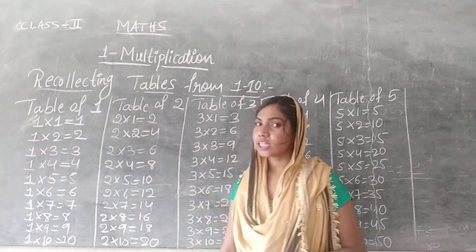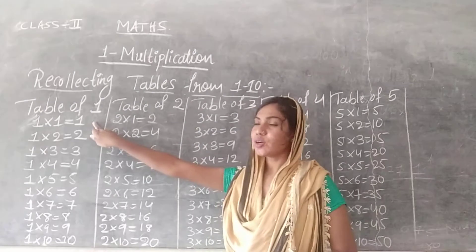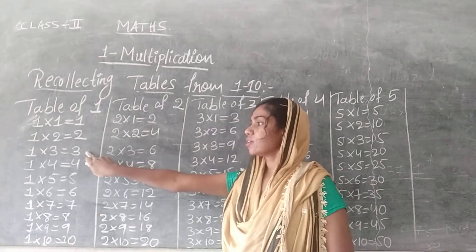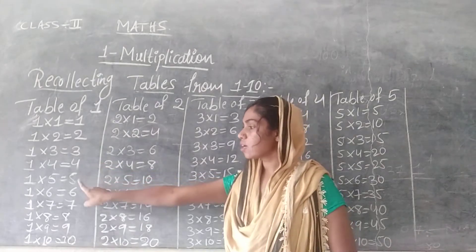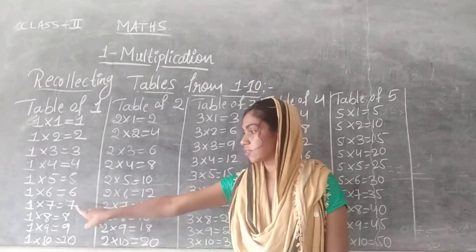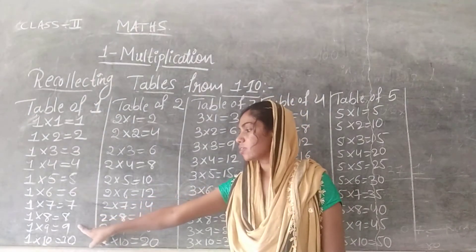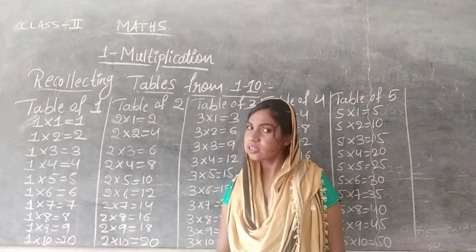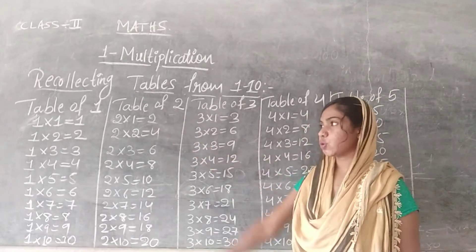Read the table of 1. 1 1s are 1, 1 2s are 2, 1 3s are 3, 1 4s are 4, 1 5s are 5, 1 6s are 6, 1 7s are 7, 1 8s are 8, 1 9s are 9, 1 10s are 10. And now read the table of 2.